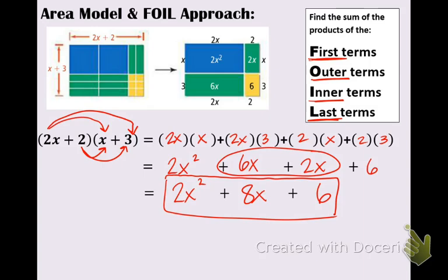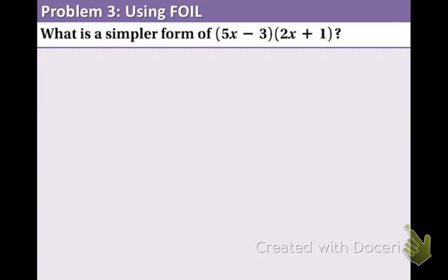In example 3, we're going to do this once again so you can see it in action with different numbers. Using foil, what is the simpler form of 5x minus 3 times 2x plus 1? So let's talk about this first. First terms are 5x and 2x. So we're multiplying them. Once you get the hang of it, you can skip this middle step but I definitely want you to write this down right now.